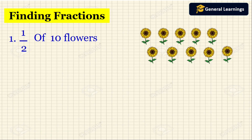First they have given one question: 1 by 2 of 10 flowers. So we are going to find 1 by 2 of 10 flowers. 1 by 2 will be called as a half. So out of 10 flowers we are going to find the half. For that, 1 by 2 should be written as it is, then multiplied. So now we are going to multiply the fraction with the whole number. The fraction is 1 by 2 and the whole number is 10.